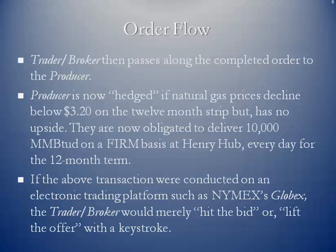If prices fall, they're locked in at $3.20, but they have no upside — if prices go higher, they can't reap any benefit. However, the decision has to be made earlier that the producer is OK with $3.20. They're now obligated to deliver 10,000 MMBTUs a day on a firm basis at the Henry Hub every day for the next 12 months.